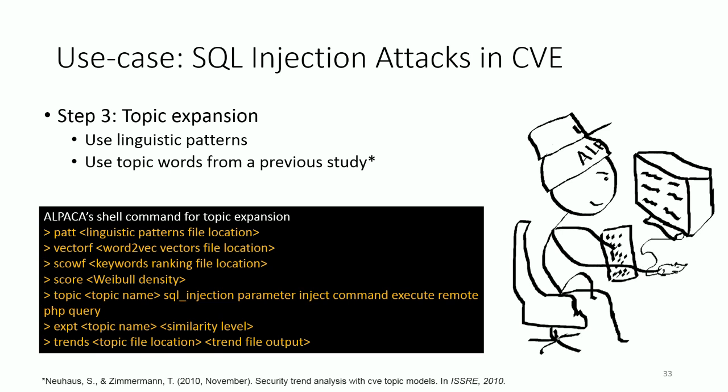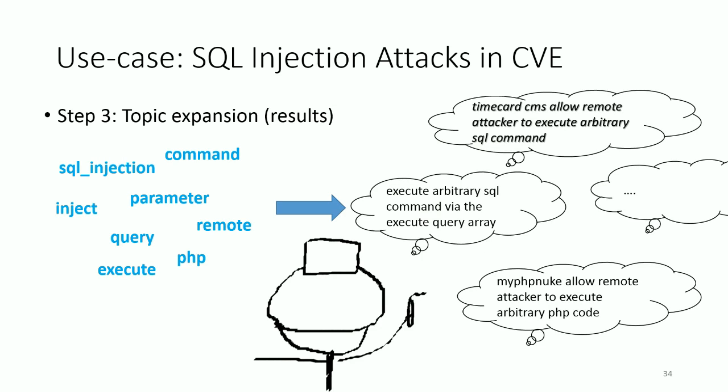In step 3, we can further expand the topic of SQL injection attacks by using either the linguistic patterns provided with the early version of Alpaca, or by extracting from the current dataset. In this scenario, we simply choose the former option, as the extraction process deserves a whole other demonstration which is discussed in our paper. Besides, we want to see some results as soon as possible to see if Alpaca works. Here are some results of topic expansion.